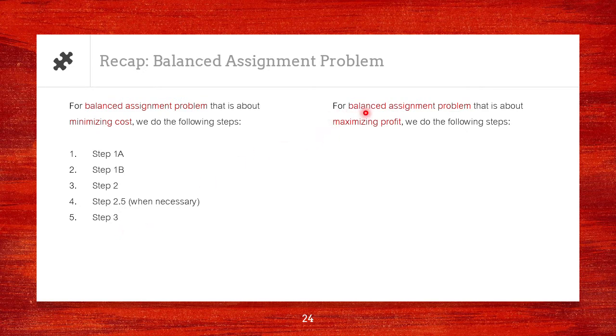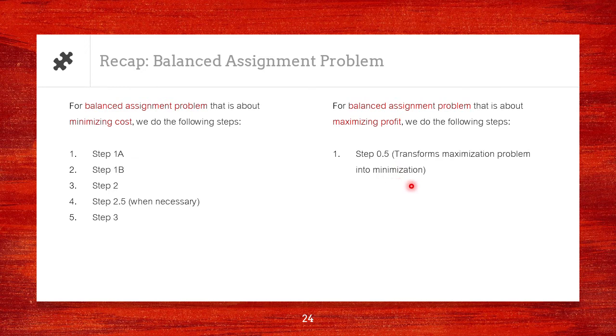For balanced problem that has maximizing profit, the first step is to carry out step 0.5. The idea for step 0.5 is to transform the maximization problem into a minimization. Once step 0.5 is carried out, we have a minimization problem.